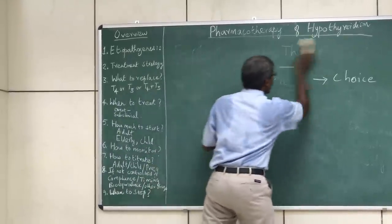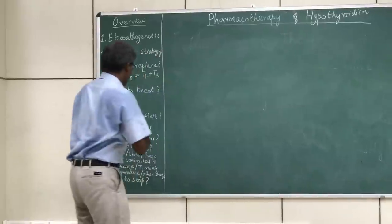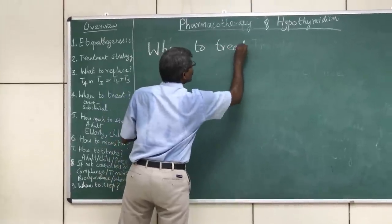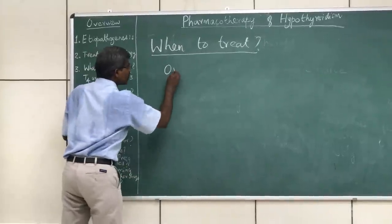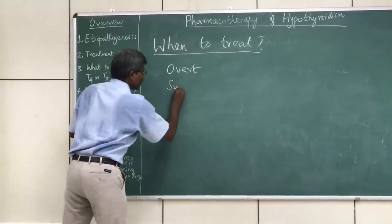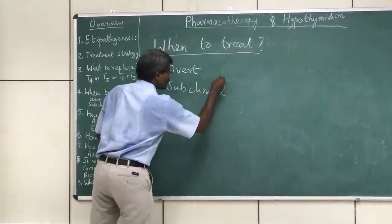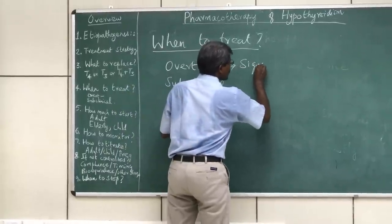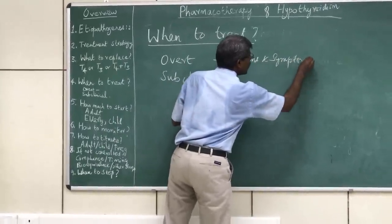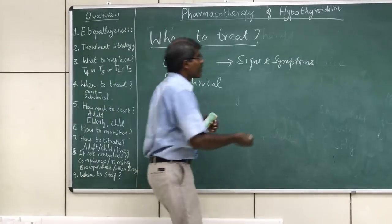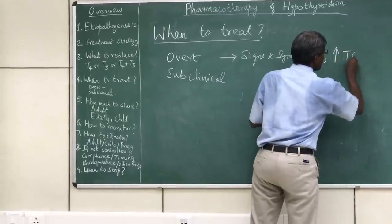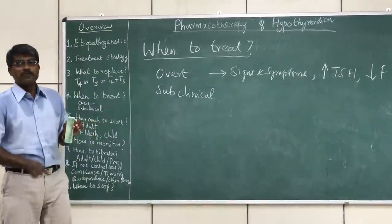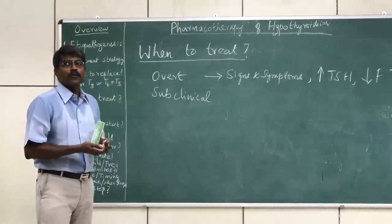When should we decide to treat the patient? Two clinical entities exist: overt hypothyroidism and subclinical hypothyroidism. In overt hypothyroidism, the patient has signs, symptoms, and biochemical evidence of hypothyroidism — increased TSH level and reduced free T4 levels. These patients should be treated with replacement doses of levothyroxine.